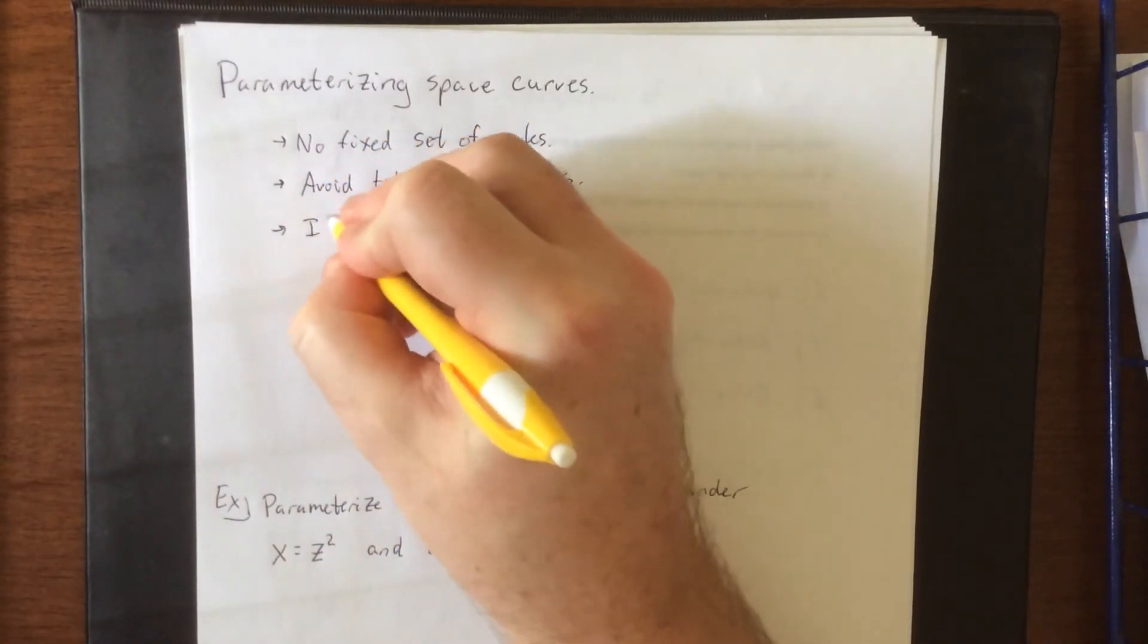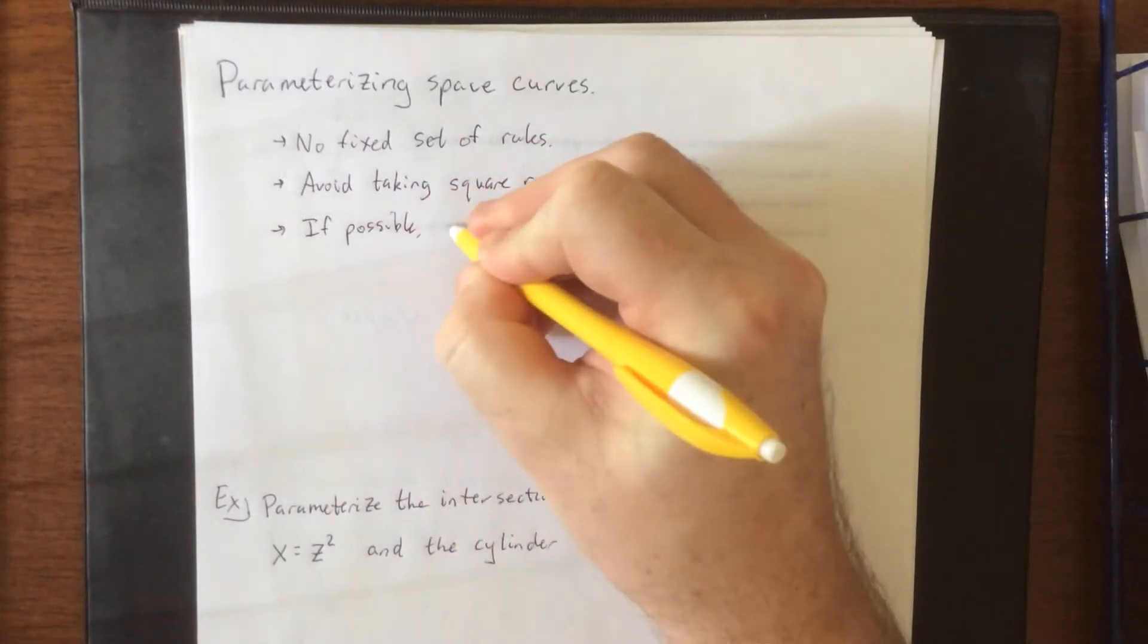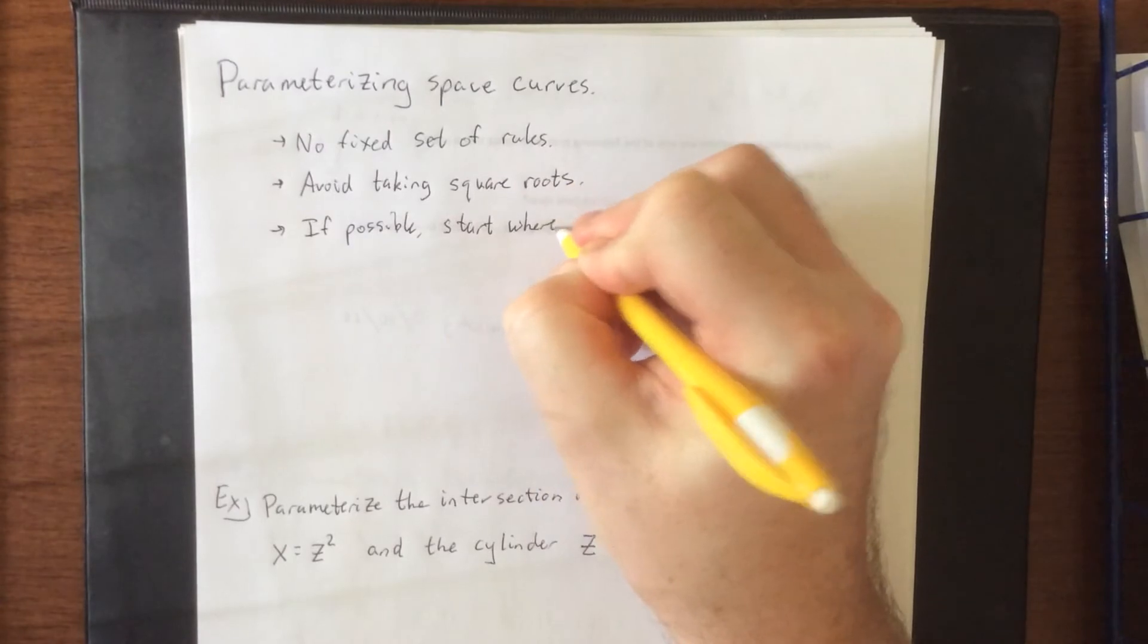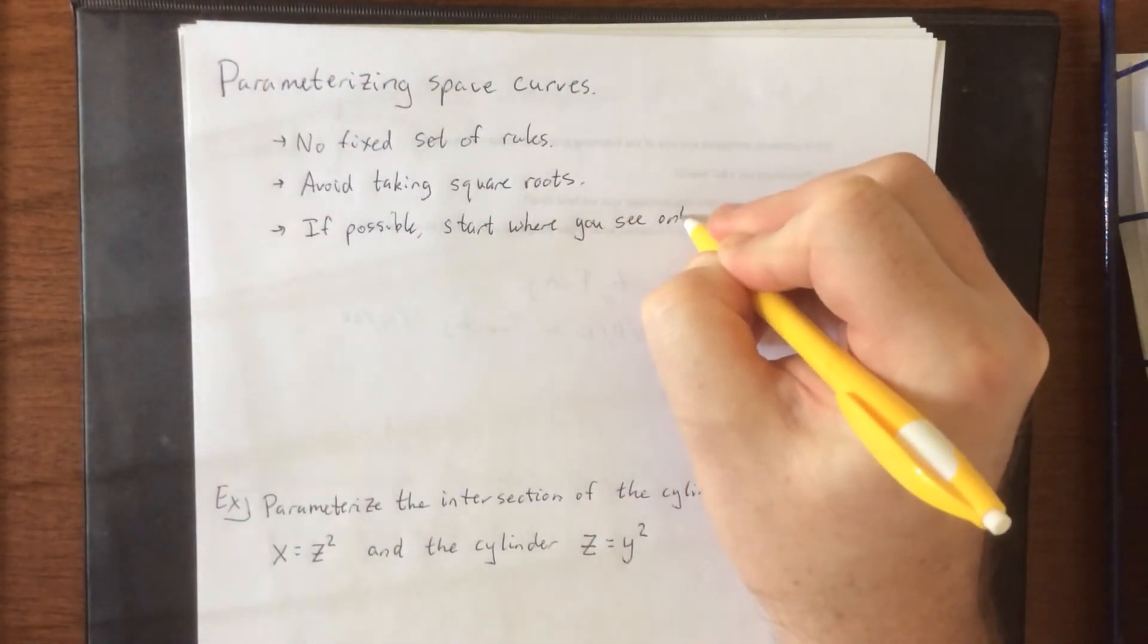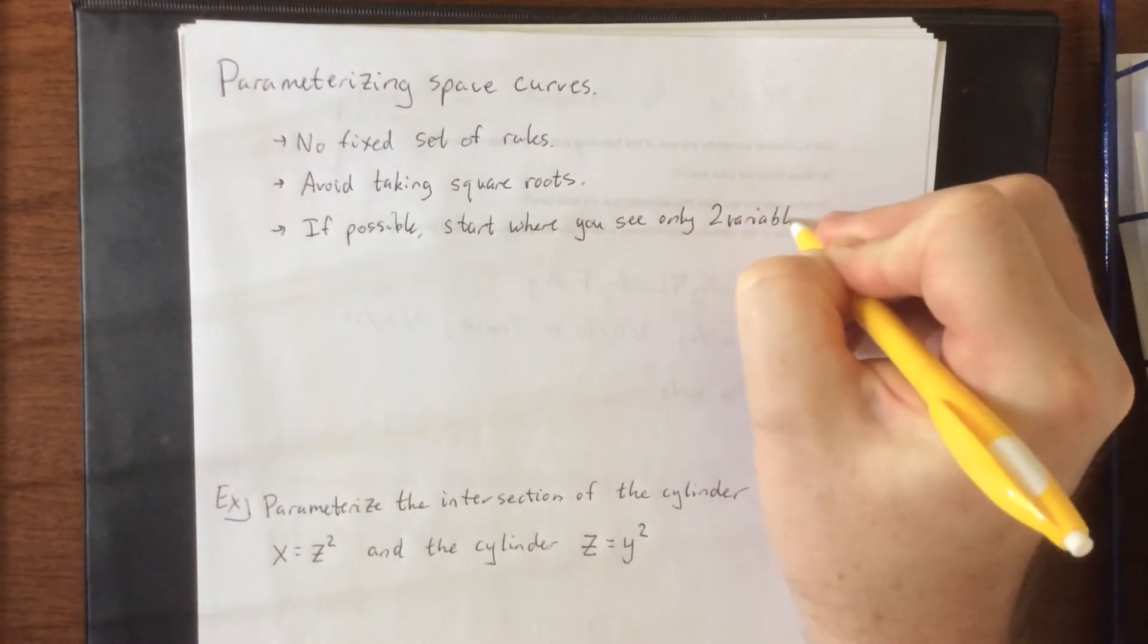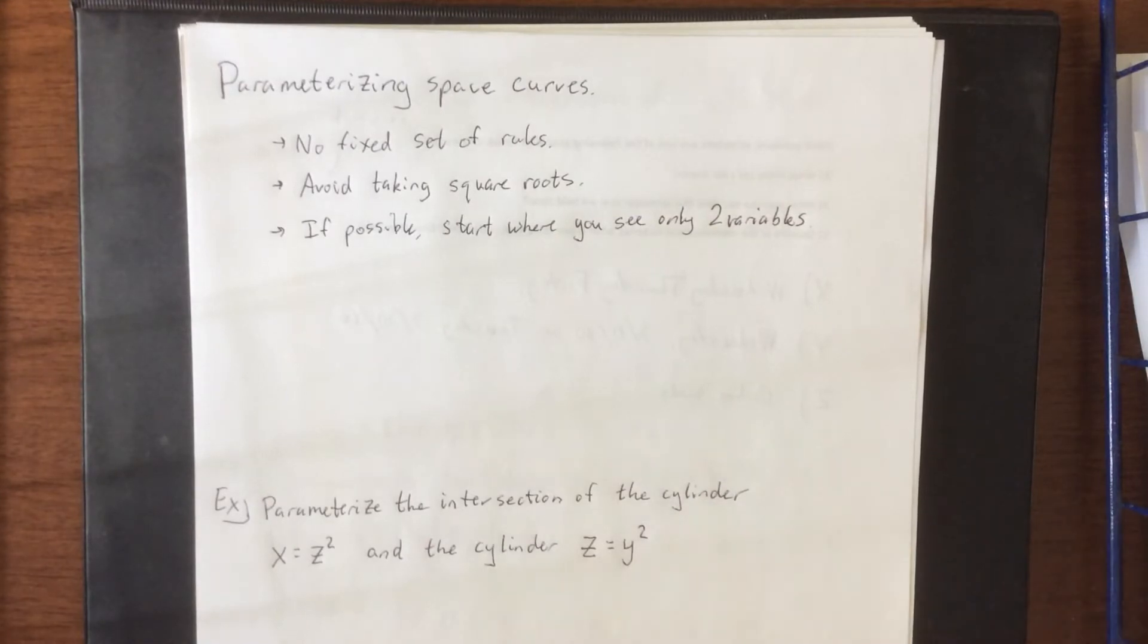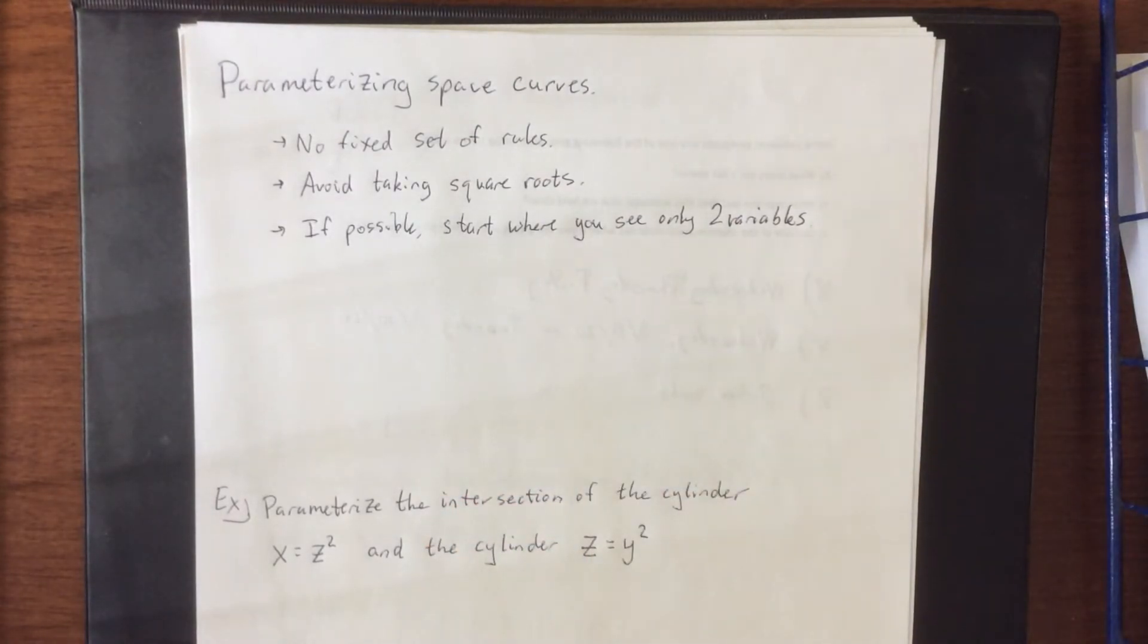Another one is, if possible, start where you see only two variables, parameterizing something where you only have two variables. We did that back in CALC 2 and therefore it should be a little bit easier. So these are guidelines, most definitely not rules.